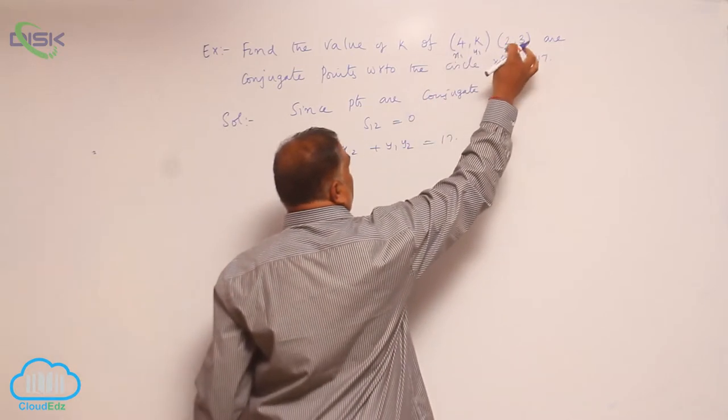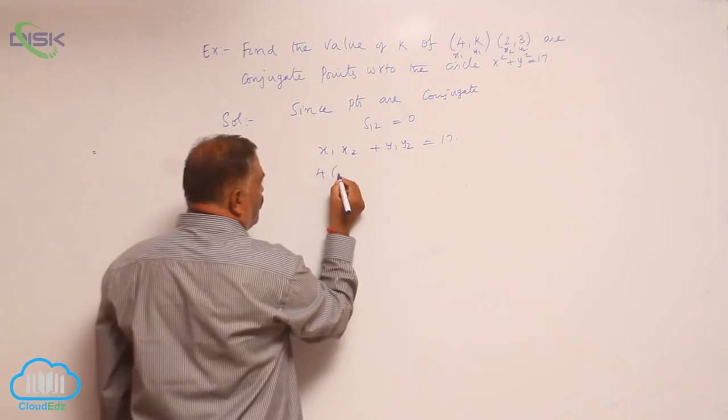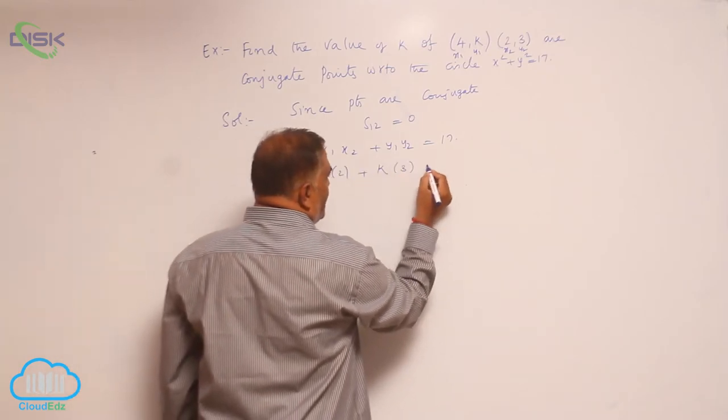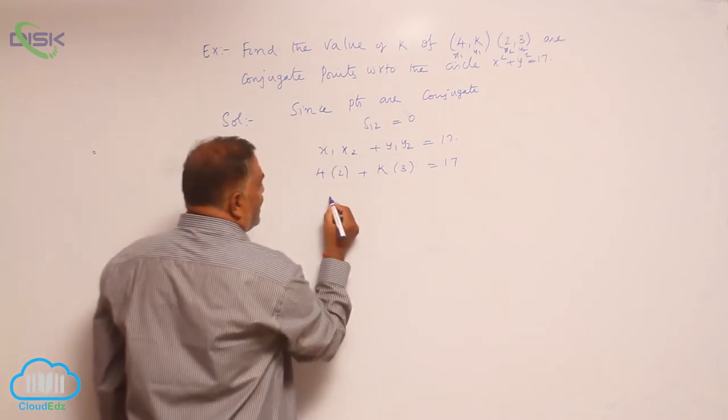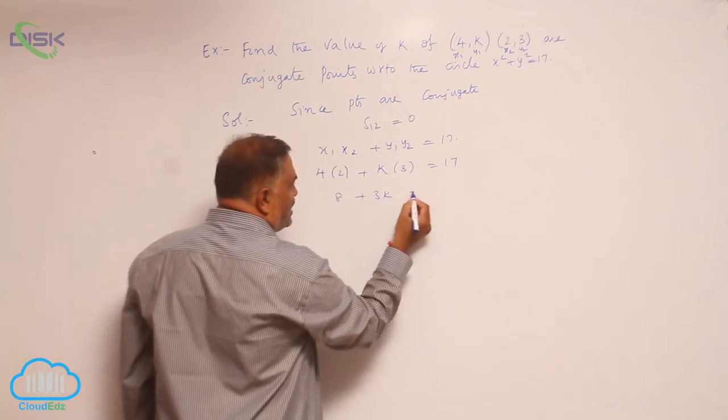Substitute now: x₁x₂, 4 times 2, plus k times 3 equals 17. Now, 8 plus 3k equals 17.